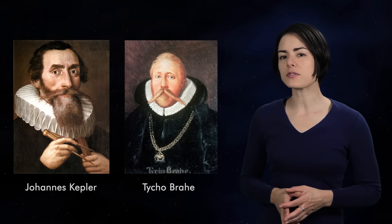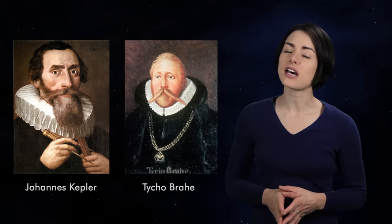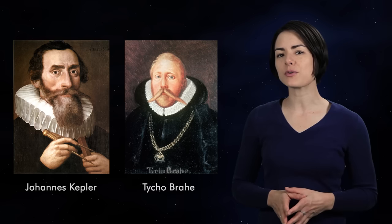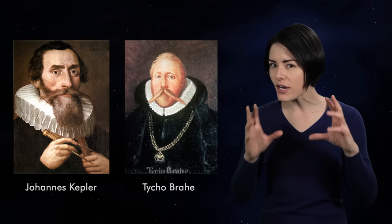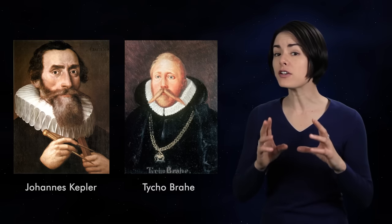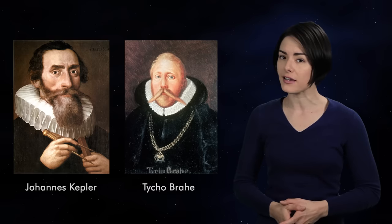Thanks to the meticulous astronomical observations of his colleague and employer Tycho Brahe, Johannes Kepler was able to test several rival hypotheses for how the Sun and the planets are arranged in the solar system, eventually leading to his three laws of planetary motion.